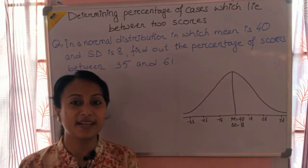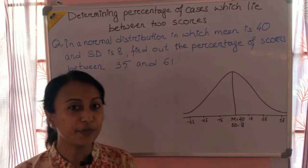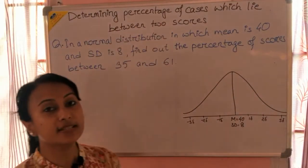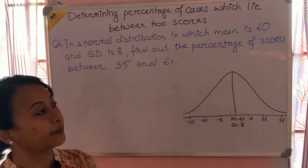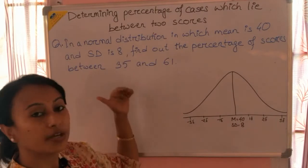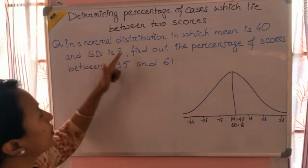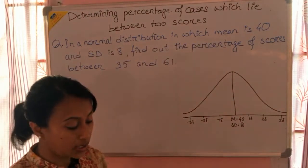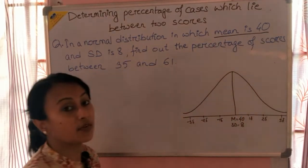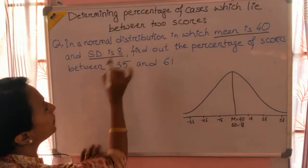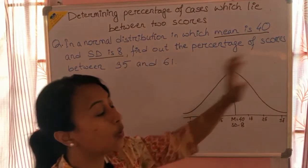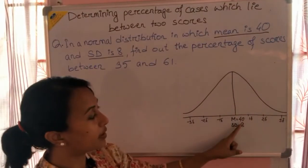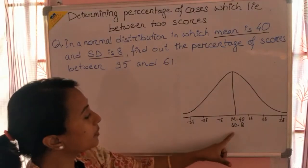Welcome, dear students, to the next video in which we will learn how to find out the percentage of cases which lie between two given scores. We will go through one example. The question is given in the normal distribution in which mean is 40. We have been given a mean score which we have already put in the NPC, and we have been given SD.